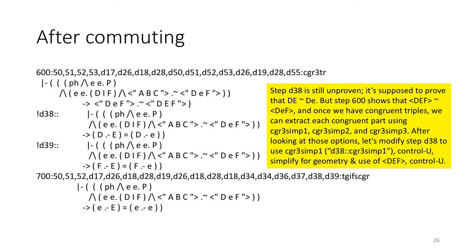Step D38 is still unproven. It's supposed to show that DE is congruent with D little e. But step 600 shows that DEF is congruent with D little eF. And once we have congruent triples, we can extract each congruent part using CGR3SIMP1, CGR3SIMP2, and CGR3SIMP3. After looking at those options, let's modify step D38 to CGR3SIMP1. CTRL-U, simplify for geometry and use of DEF, and then CTRL-U again.